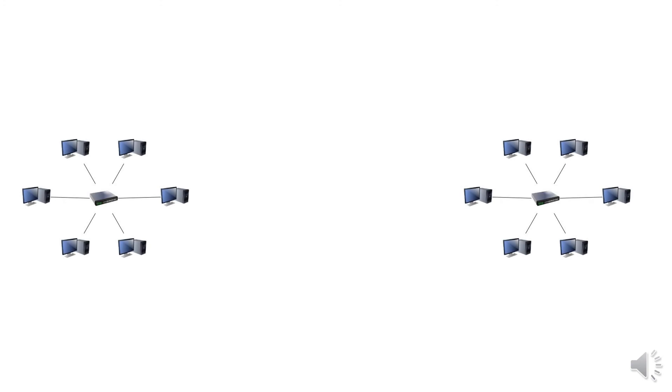To understand the router, let's look at what a network is. A network may consist of nodes, switches, hubs, and many other things. Suppose there are two separate networks — one on the left-hand side and one on the right-hand side. To connect both networks we need a router. A router connects individual networks and can also be called a gateway. The router has a routing table used to analyze the best route for data packets and forwards them accordingly.